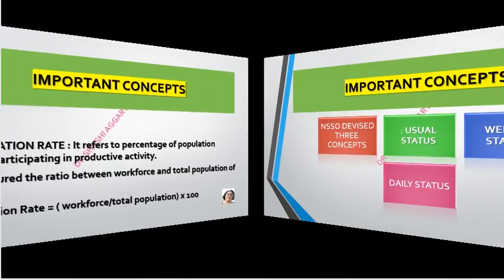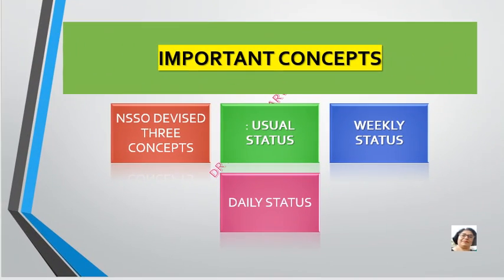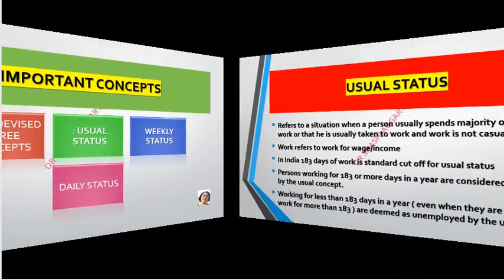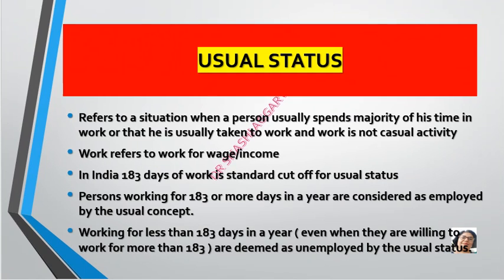The National Sample Survey Organisation has devised three concepts on the basis of which we can measure employment and unemployment: usual status, weekly status, and daily status. First, we are going to understand the usual status. Usual status means a situation when a person usually spends the majority of his time in work, and work is not a casual or temporary activity.